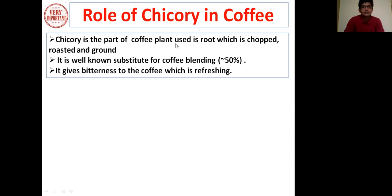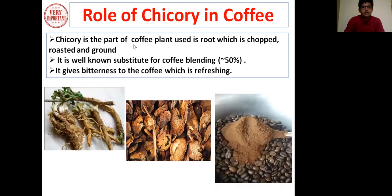What is chicory? Chicory is a plant whose root is used — it is chopped, roasted, and ground, and then mixed into coffee bean powder. This chicory gives bitterness to the coffee. These are the roots of the coffee plant — small pieces of the roots are made, dried, converted into powder form, and then this powder is mixed with coffee beans. The percentage is nearly 50%, making it a very important constituent of coffee powder. Chicory plays a very important role in making the coffee bitter.